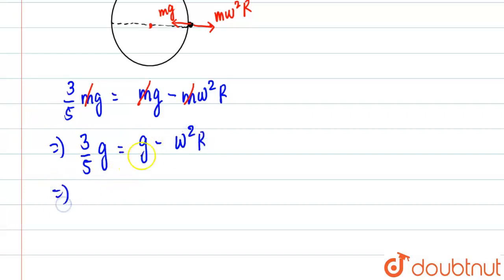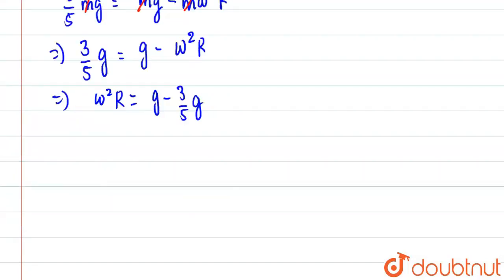We'll bring three by five g over here and omega square r over there. So we'll have omega square r will be equal to g minus three by five g. So omega square r will be equal to two by five g.